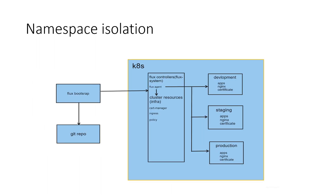In this session we will look at namespace isolation where each environment is deployed to its respective namespace in a single cluster. Here we have a Flux bootstrap command which we will run in the context of a Kubernetes cluster. This will connect to a git repo and get all the required files including the Flux controllers themselves — like the source controller, the Helm controller, and the Kustomize controller — which together constitute the Flux agent.